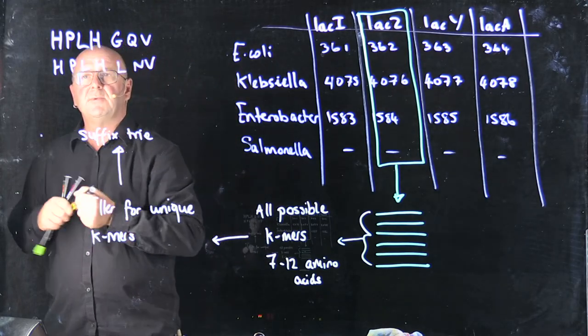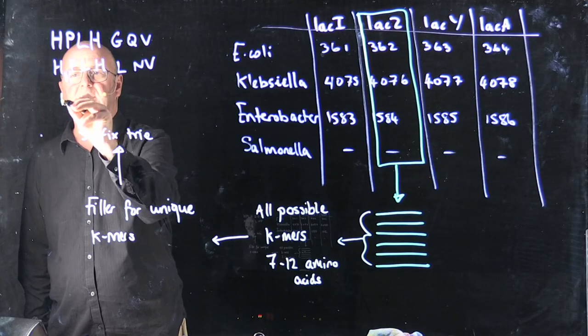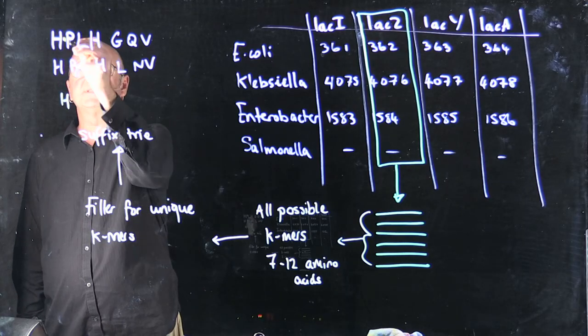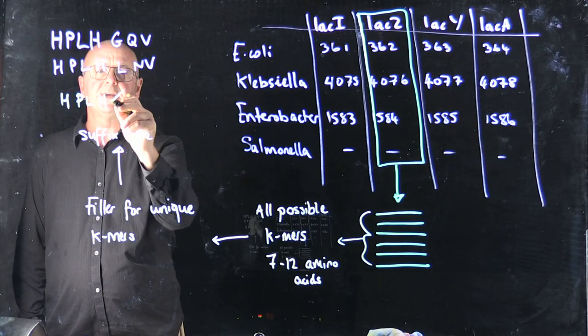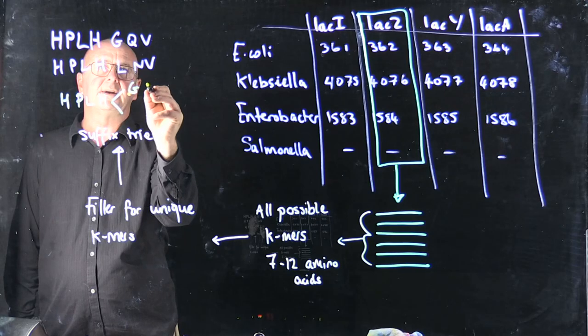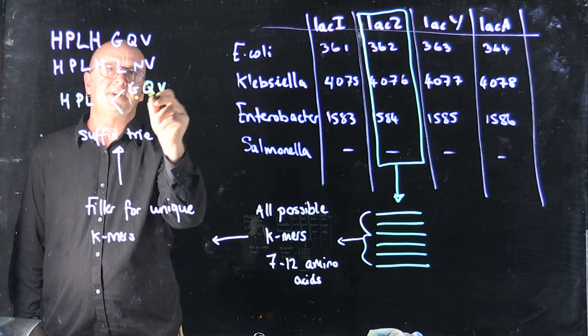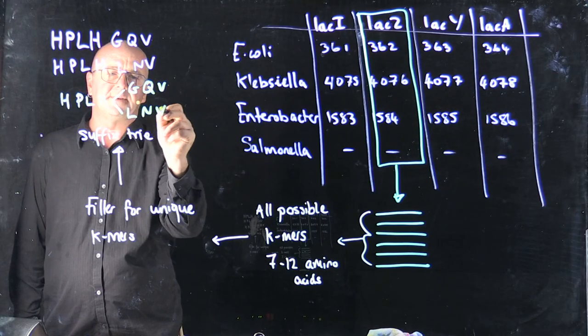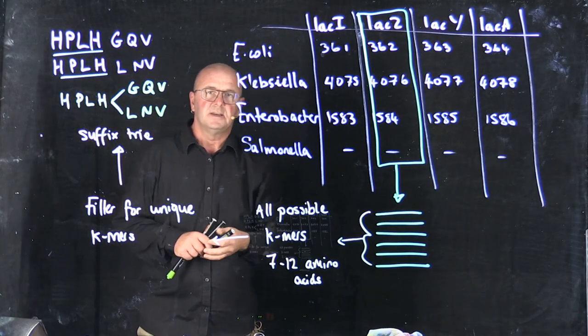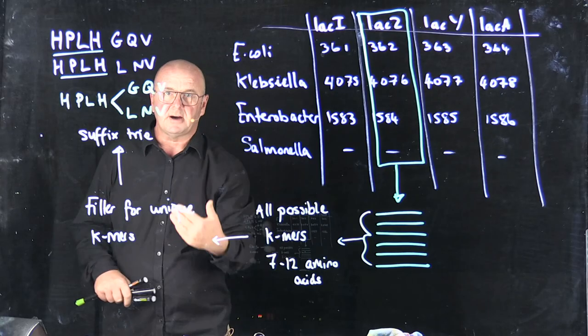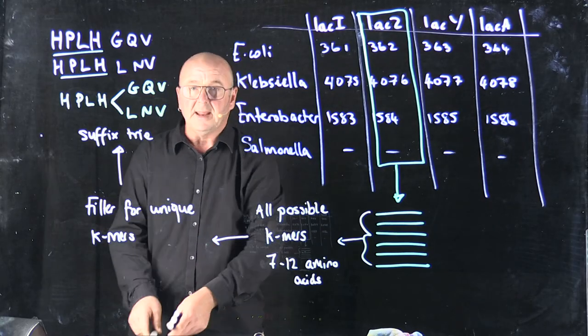and we say, OK, we can add an H-P-L-H. And depending on which of these we're adding, we can either add the G-Q-V or the L-N-V. We recycle the first four characters in each case as part of the suffix tree.